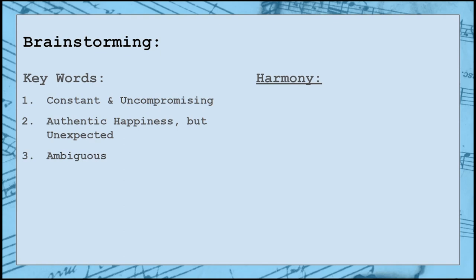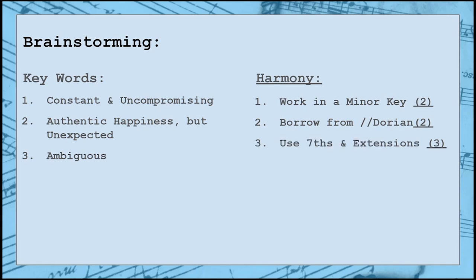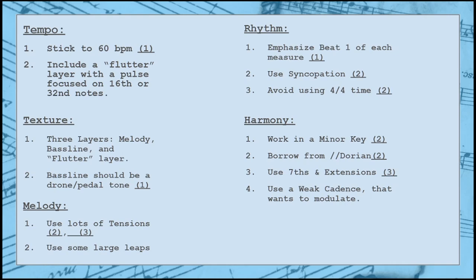Finally, for the harmony, I have a few different ideas. I want to work in a minor key to kind of drive home concept number two from my key words. But to keep things from sounding too dark, I'll also want to borrow from the parallel Dorian to give a more whimsical feel. I'm open to using seventh chords and chord extensions beyond the triad. And I want to make sure that the final cadence is super weak. This entire theme is supposed to be an invitation to the character — the other two themes I need to write are going to act as answers to this one theme. So I want to make sure that this one feels open-ended, like it needs to be answered. I'd also like to use this cadence to pull me towards a new key. So these strategies are going to inform each of the decisions I make while writing my theme, helping me stay on track and not lose sight of what my theme needs to sound like.